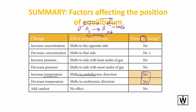A catalyst has no effect on the equilibrium position. However, in an open system it will allow the reaction to reach equilibrium much faster. In the catalyst videos, you'll see in the graph that equilibrium is formed quicker, but you won't notice a difference in the equilibrium itself because the forward and reverse directions are both speeded up equally — they remain in balance.